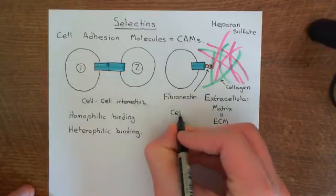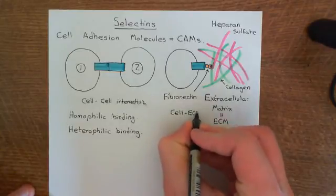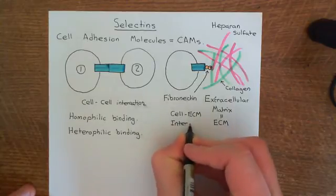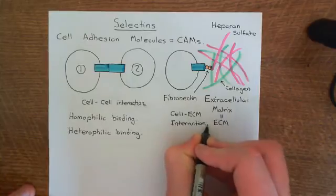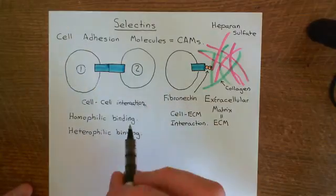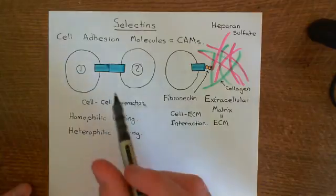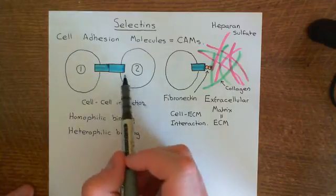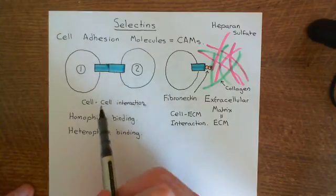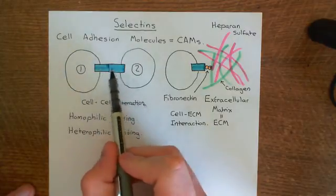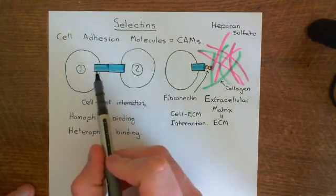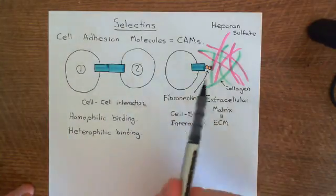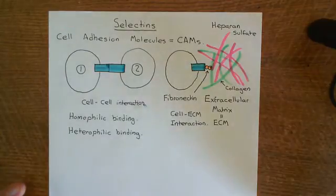This is a cell-ECM interaction, ECM being short for extracellular matrix. All cell-ECM interactions are considered as heterophilic binding. So either you can have homophilic binding where the two cell adhesion molecules between cells are exactly the same protein, or you can have heterophilic binding — which means either the two cell adhesion molecules between cells are not the identical protein, or you've got a cell adhesion molecule attaching to a component of the extracellular matrix.